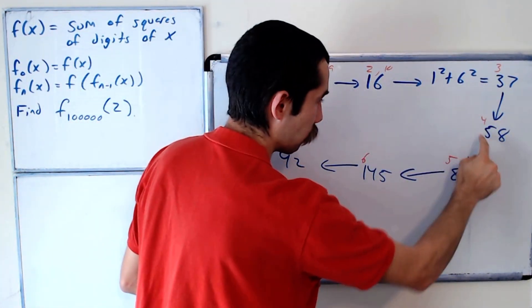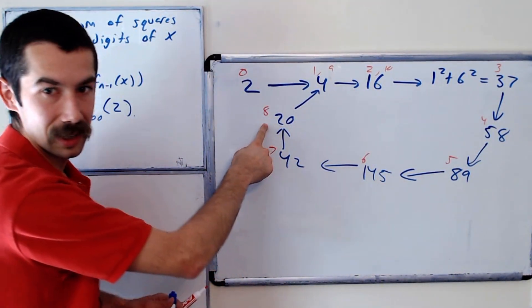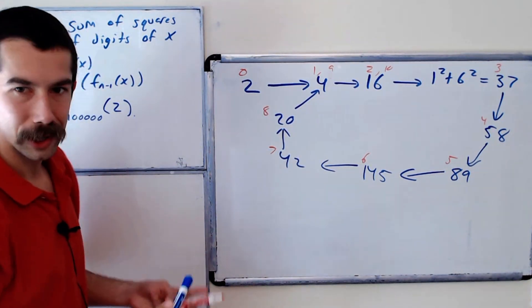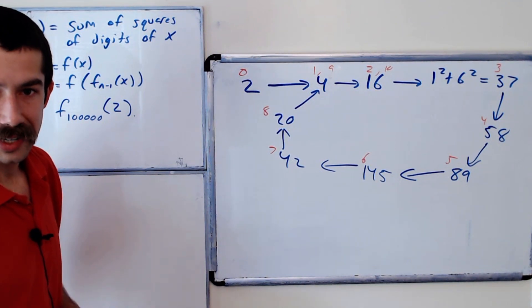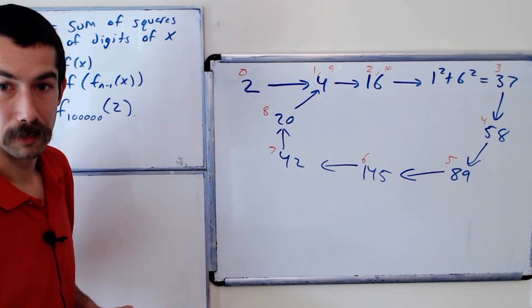Let's count that out: one, two, three, four, five, six, seven, eight. Okay, so the question really could be restated as what is 100,000 mod 8? And then what's that term?